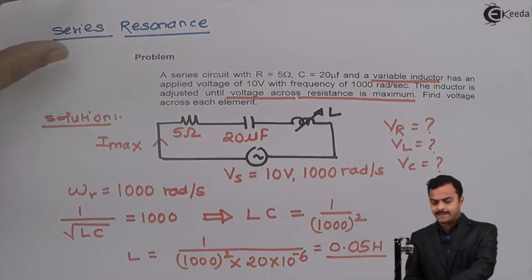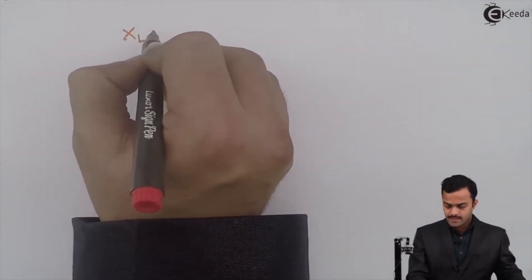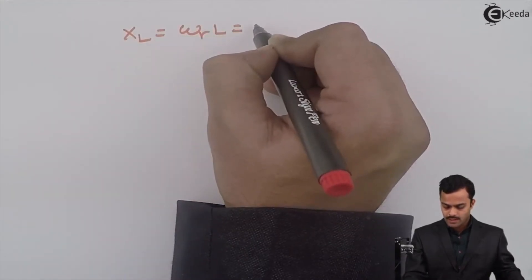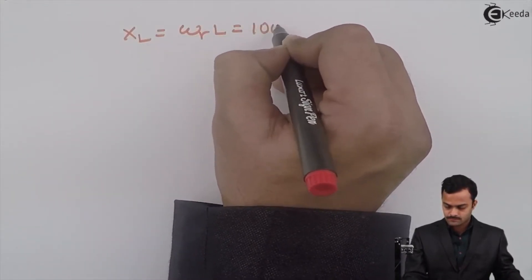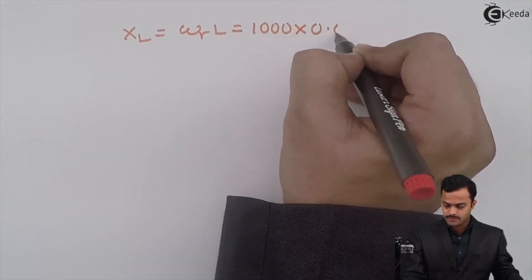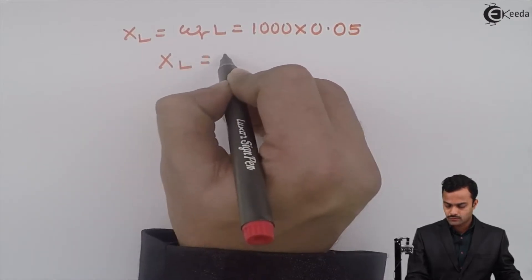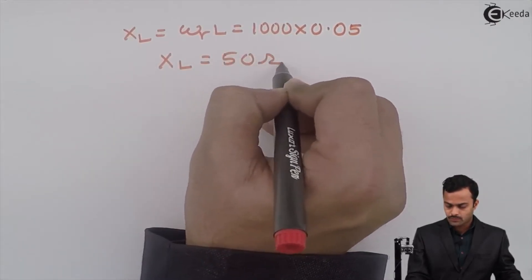From the L I can get the value of XL. XL will be omega r L, omega r is 1000 and L we have calculated 0.05. I am getting XL equal to 50 ohm.